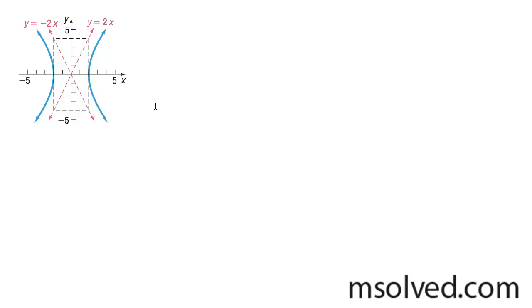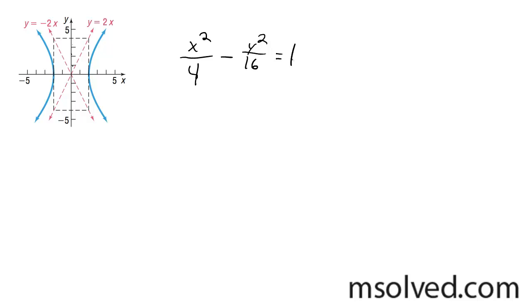Let's find a graph that matches with the hyperbola that we have here. The major axis, or the transverse axis, is with x. It's got a unit length of 2, so it's just going to be x squared over 4, minus, and then for y — counting 1, 2, 3, 4 — it's just going to be y squared over 16 is equal to 1. That's it.